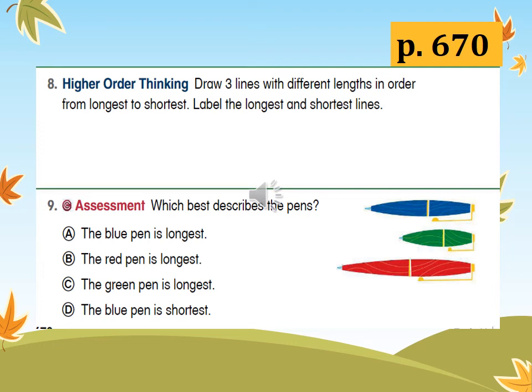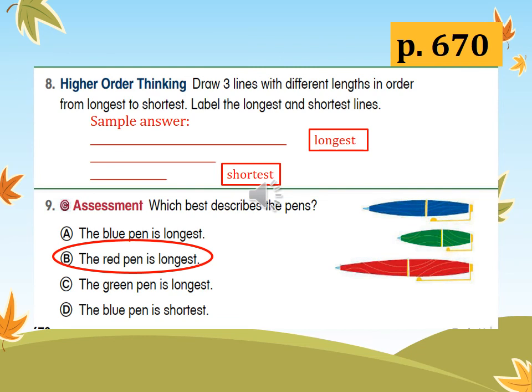Can you do that? Number nine: which best describes the pens? A — the blue pen is longest. B — the red pen is longest. C — the green pen is longest. D — the blue pen is shortest. Think — which is the correct answer? Let's see if your answers are correct. These are the correct answers. Good job! Clap your hands for yourself for doing a great, great, great job. Good job, grade one.